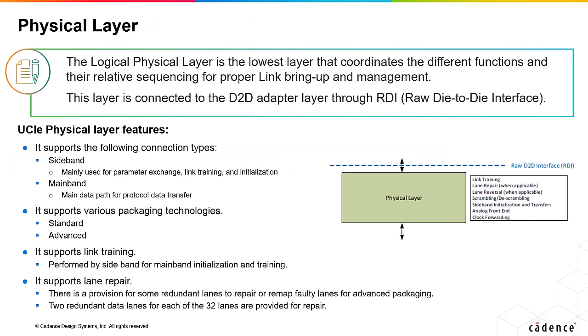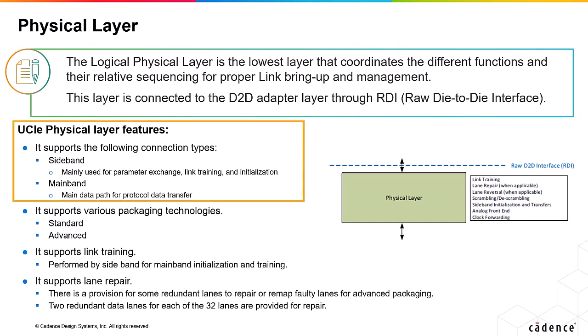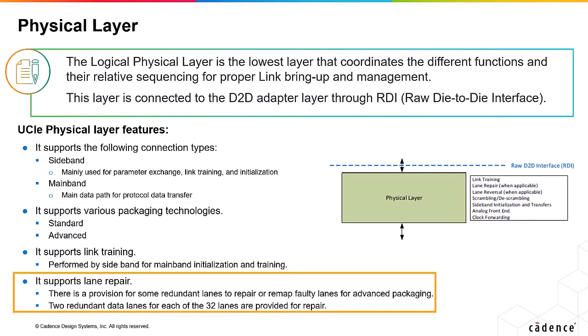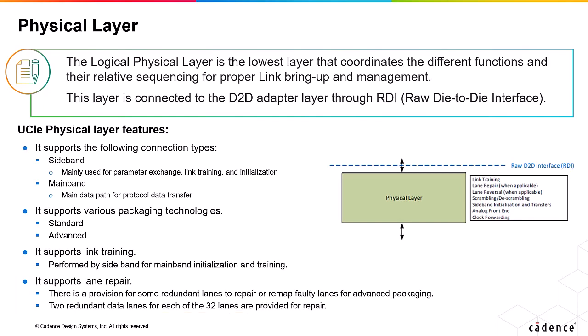The physical layer of UCIE is the lowest layer of the UCIE stack that coordinates many functions and their sequencing for proper link up and management. This layer is connected to the D2D adapter layer through a raw die-to-die interface. It supports sideband and mainband connection types. The sideband is mainly used for parameter exchange, link training, and initialization, while the mainband is the main data path used to transfer protocol data. It supports standard and advanced package technologies. Link training is performed by the sideband path for mainband initialization and training. It also supports lane repair, enabled by provision of redundant lanes to remap faulty lanes — supported for advanced packaging only, with two redundant data lanes provided for each of the 32 lanes.